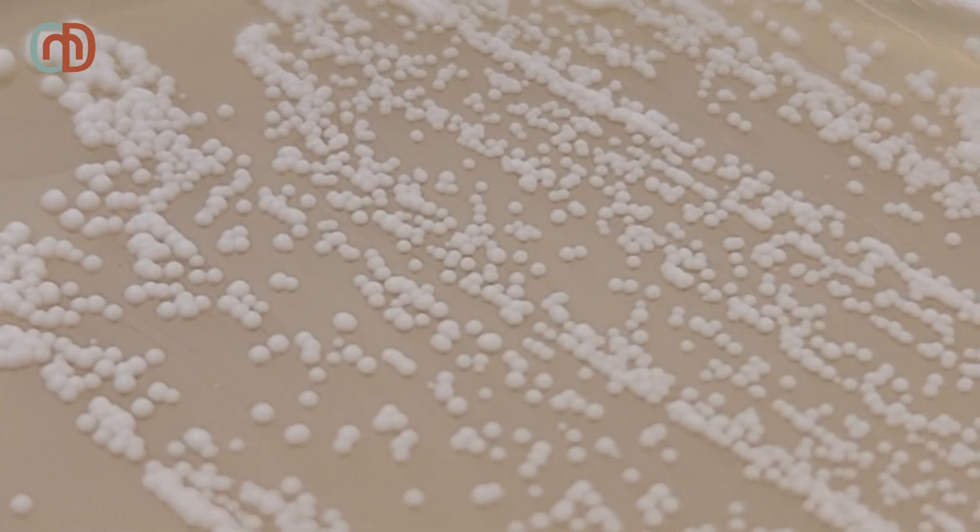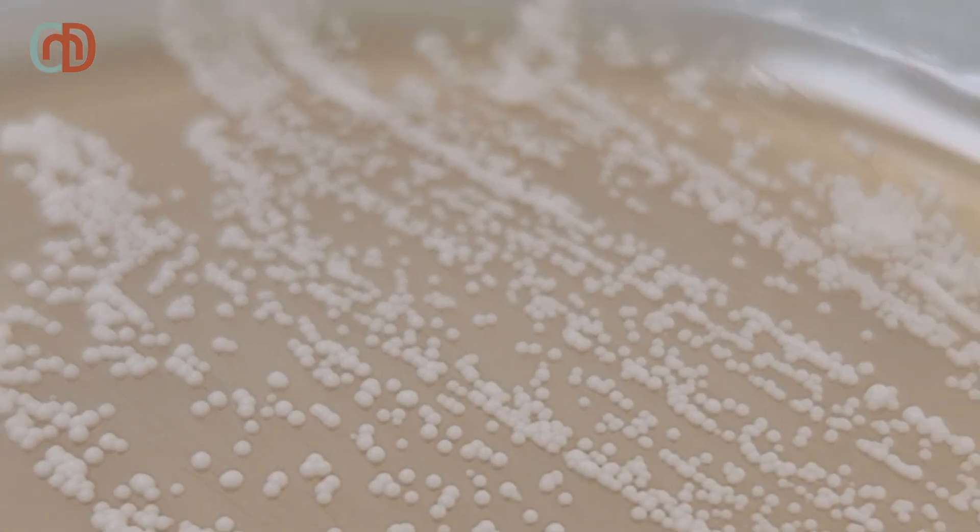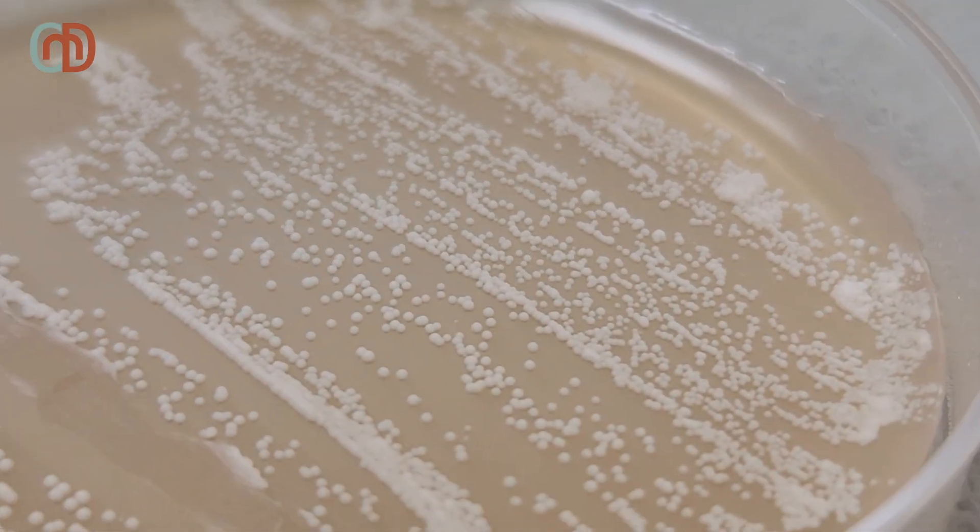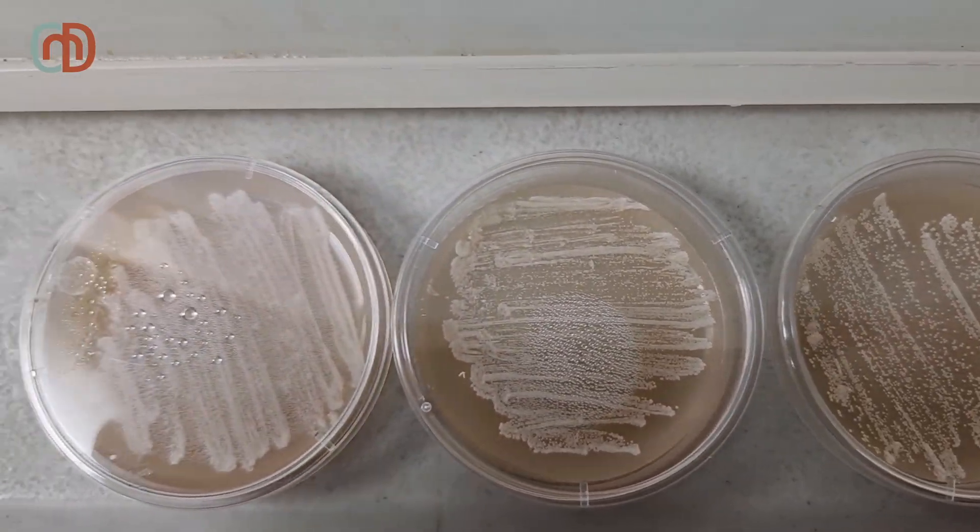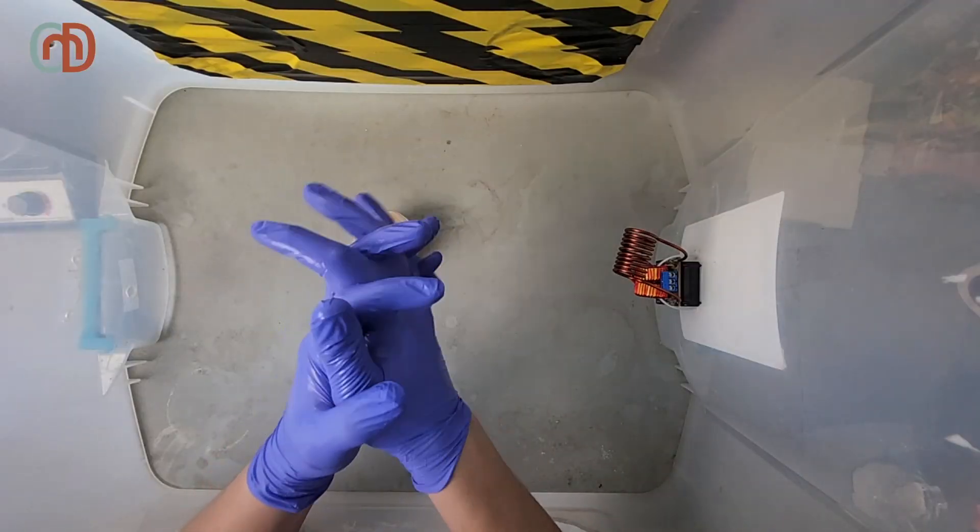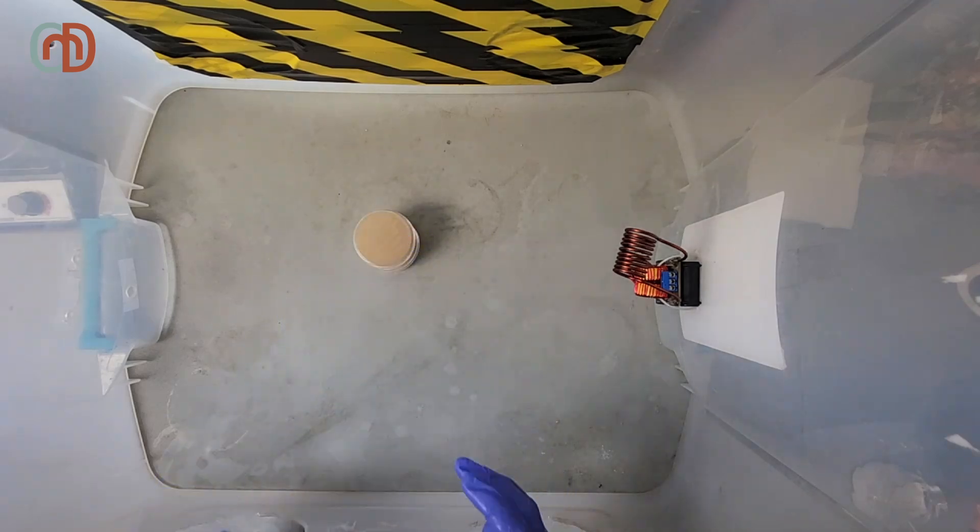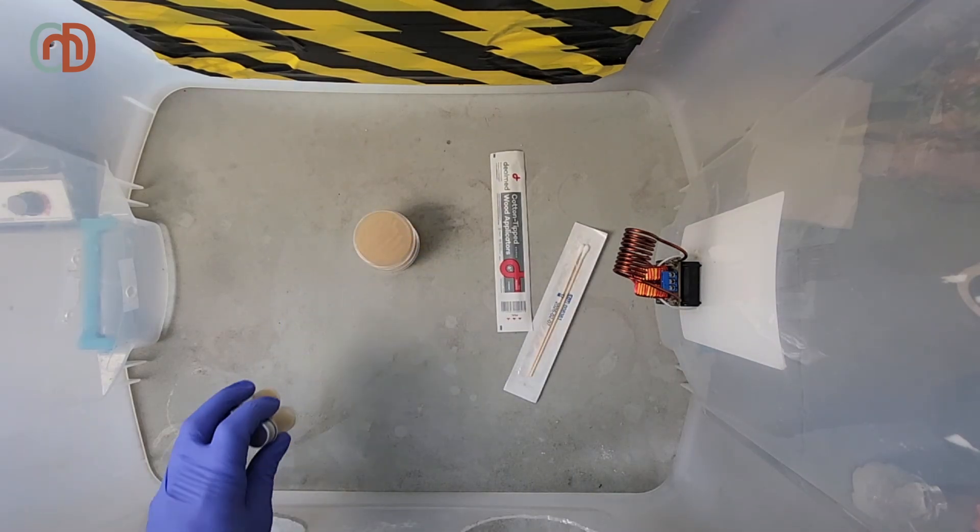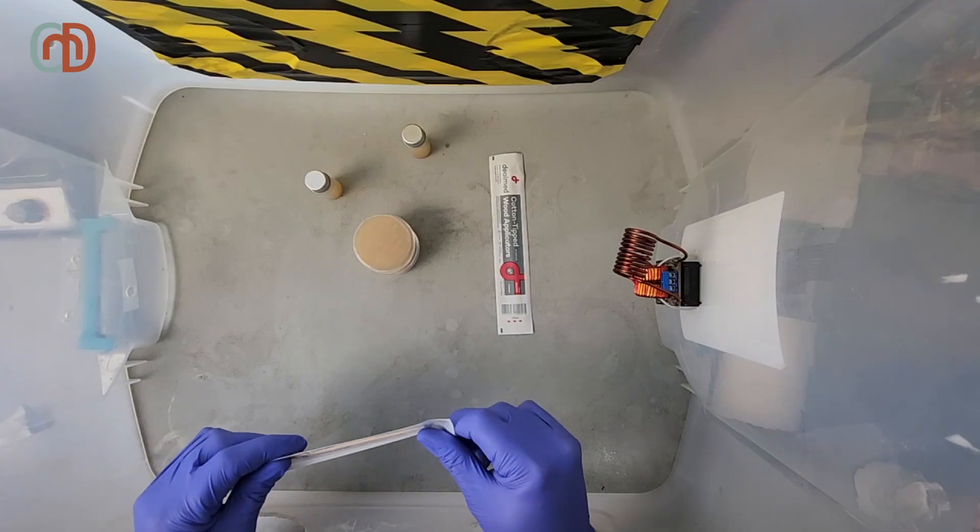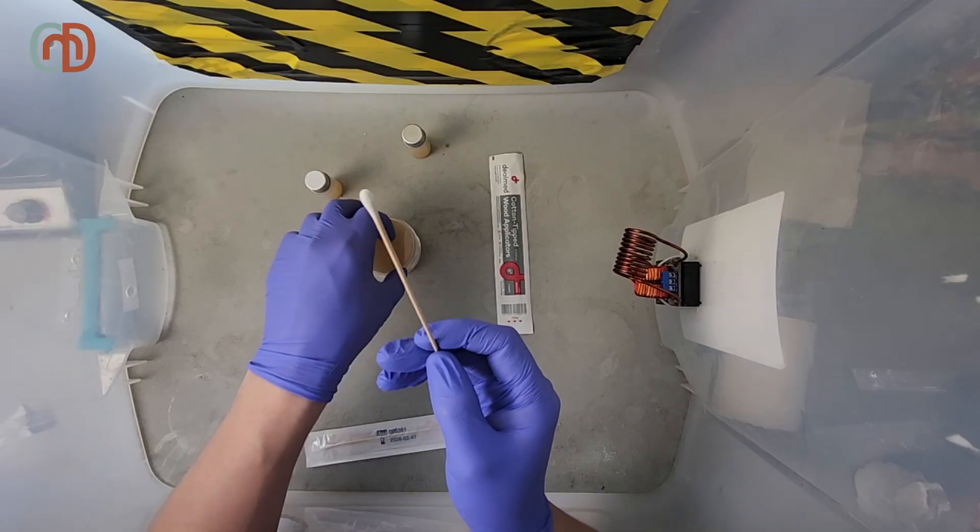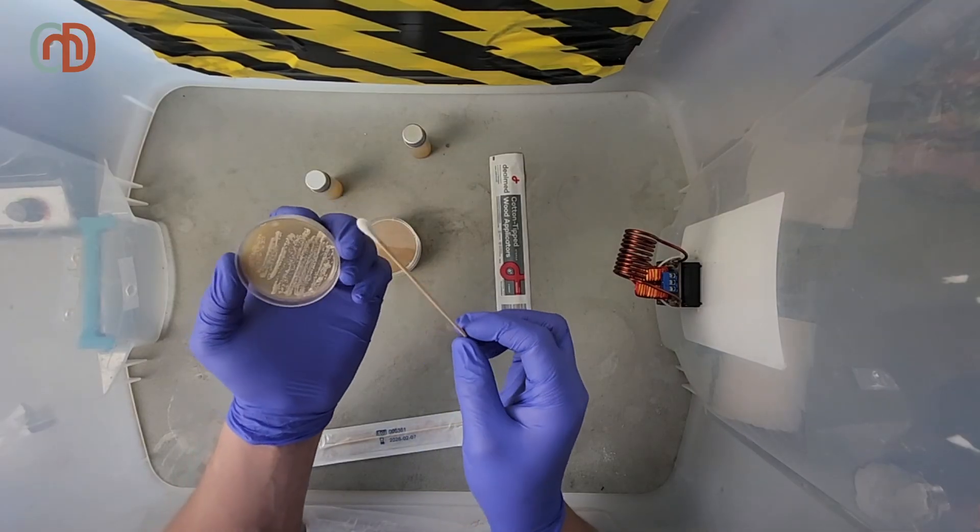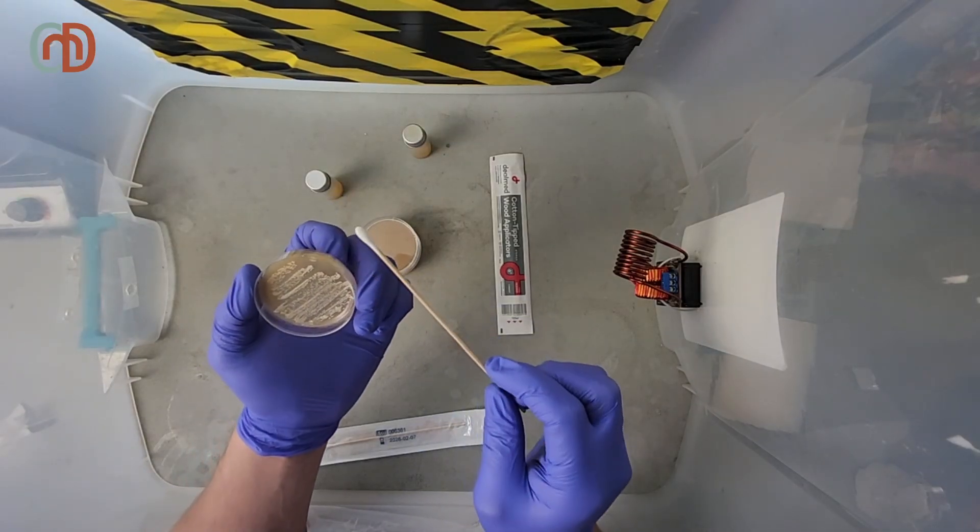After around 48 hours, I see some nice growth on the plates. Yeast should present as creamy and white and should not have any colors in it. These are some great examples of what healthy yeast should look like. I sanitize my hands, grab some swabs, and the slants that we'll be transferring yeast into.